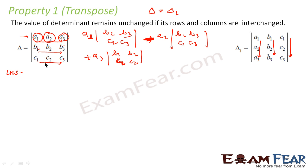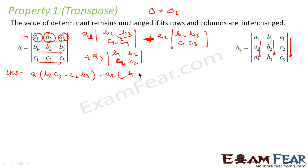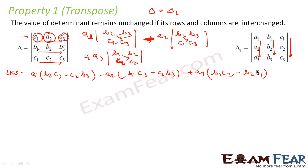So the LHS is: a1 into (b2·c3 minus c2·b3), minus a2 into (b1·c3 minus c1·b3), plus a3 into (b1·c2 minus b2·c1). This is my LHS.